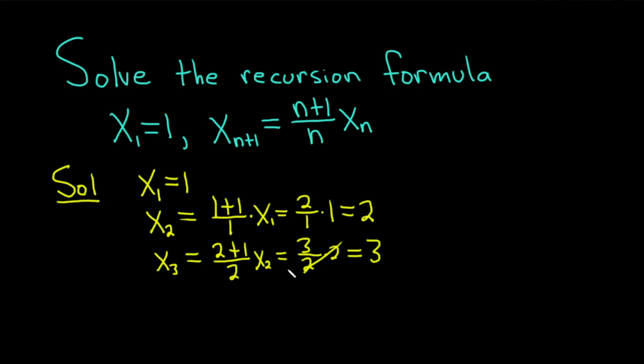We notice that a pattern is starting to develop. We have a 1 here and a 1 here, a 2 here and a 2 here, a 3 here and a 3 here. So you could guess that x sub 4 is equal to 4. Let's go ahead and just make sure that's correct.